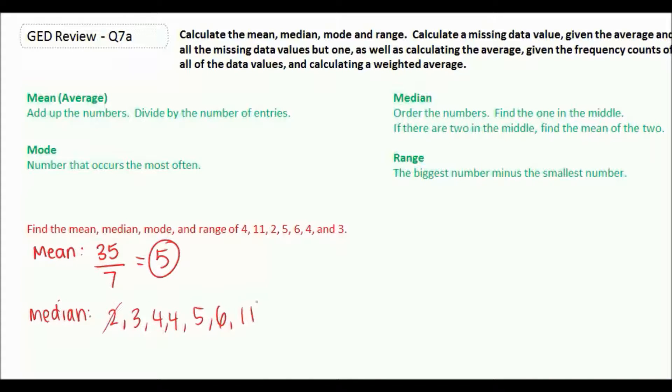So you start on one side, you cross off a number on the other one, you keep going crossing off the same amount on each side, and then you get your number in the middle, which is your median.